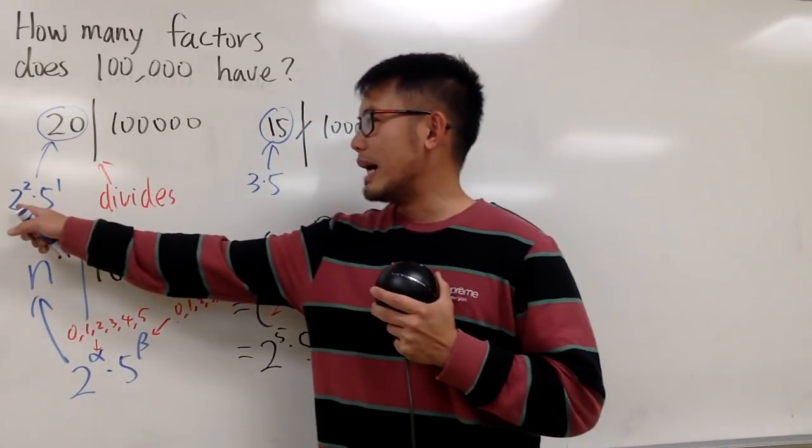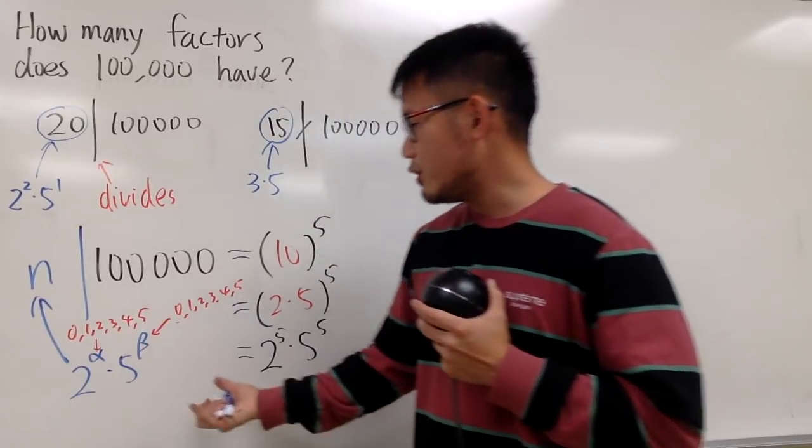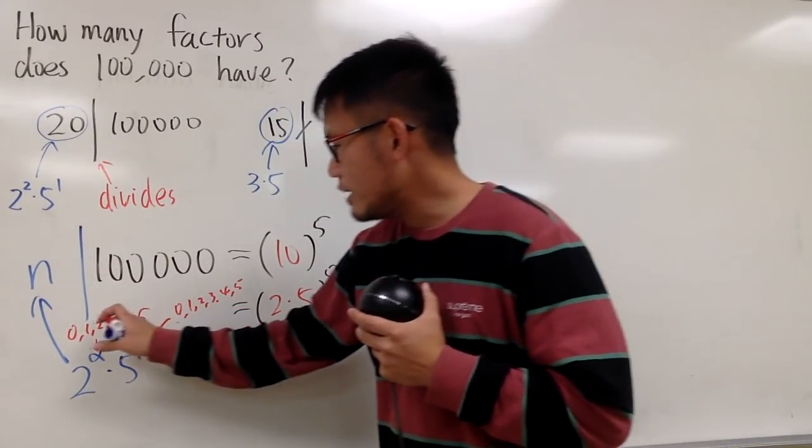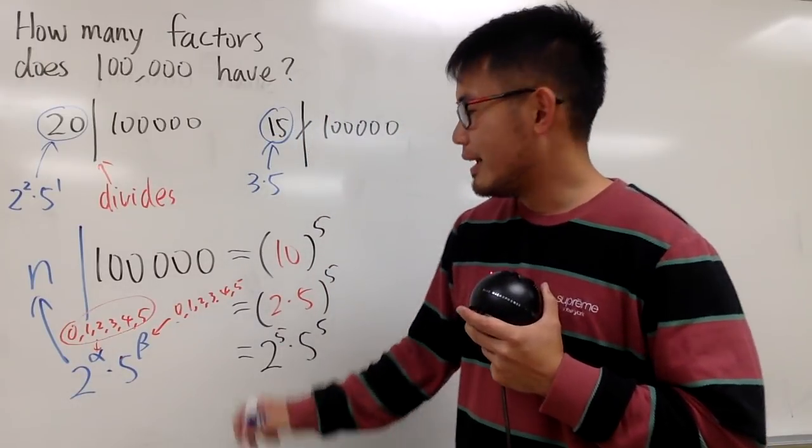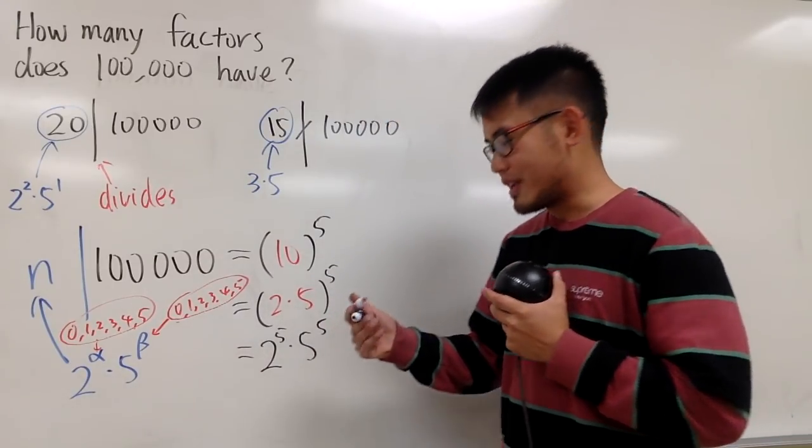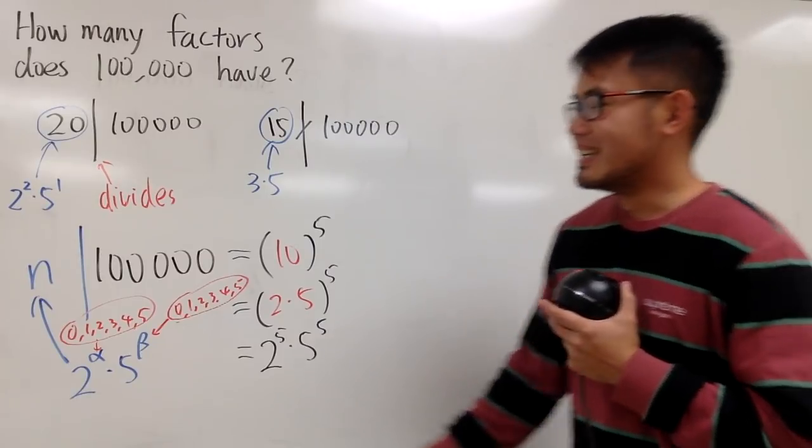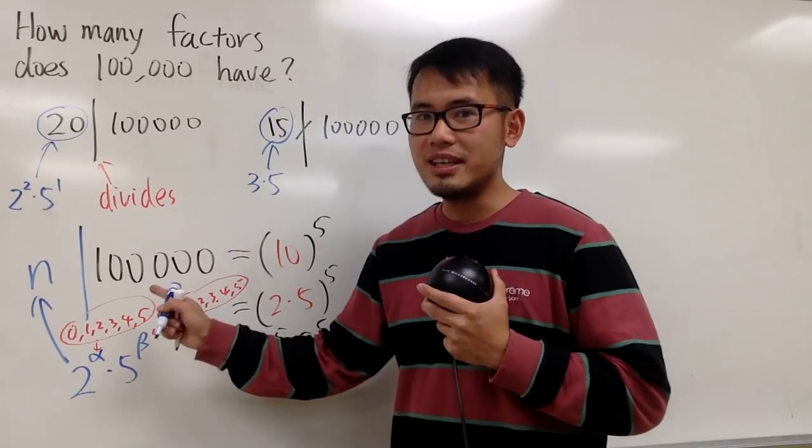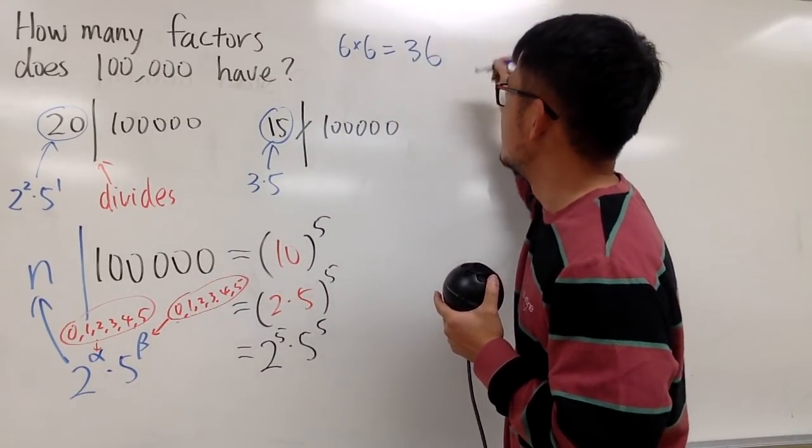so for example, I can just choose 2 to the second times 5 to the first. And that number is guaranteed to be a factor of 100,000. And now, how many choices of alpha do we have? 6 of them. How many choices of beta do we have? Also 6 of them. So, you see that? I will just tell you guys, the number of factors for 100,000 is just 6 times 6. So, 6 times 6, you know this is 36.